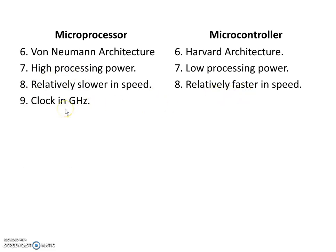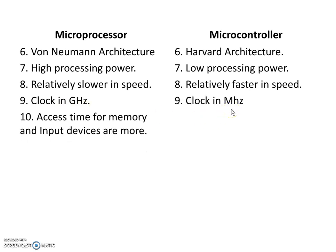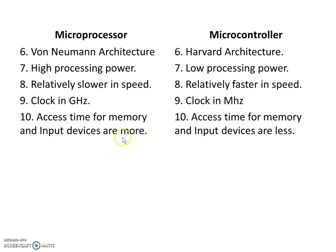The clock used in microprocessors is in gigahertz and the clock used in microcontrollers is in megahertz. Access time for memory and input devices is more in microprocessors and less in microcontrollers.